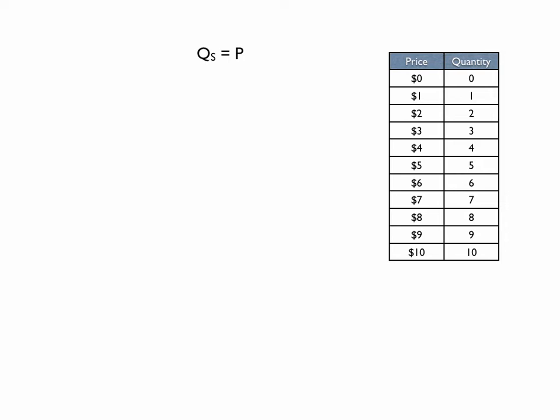At a price of zero, quantity supplied will be zero. At a price of four, quantity supplied will be four. At a price of seven, quantity supplied will be seven. At a price of ten, quantity supplied would be ten.